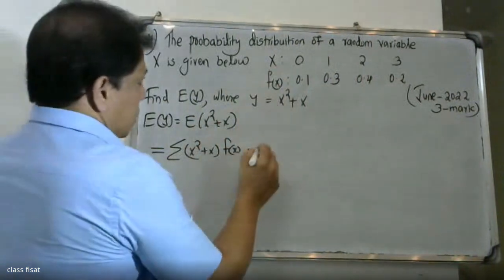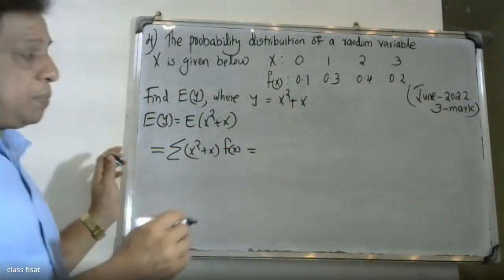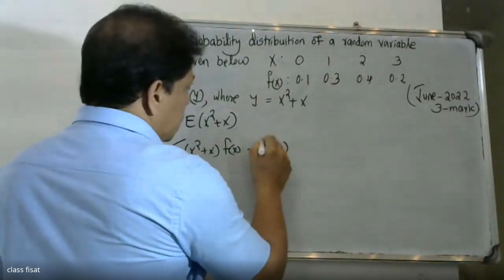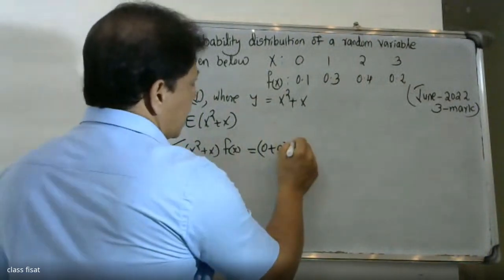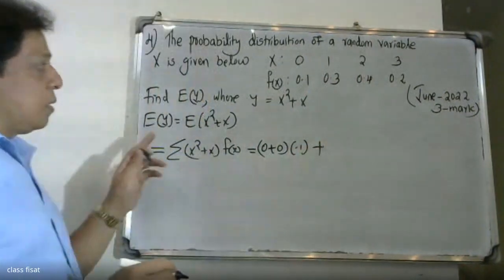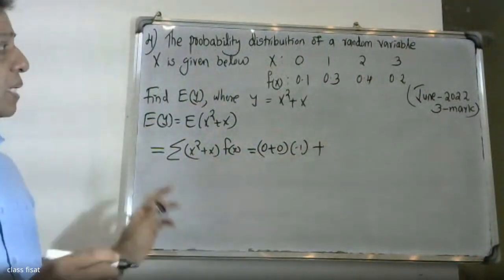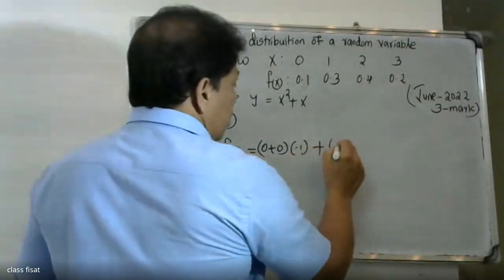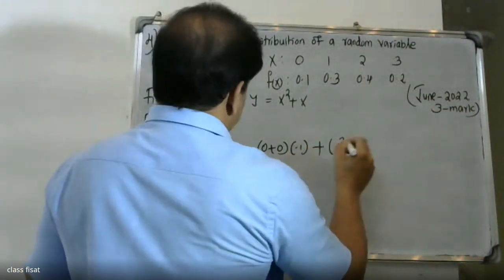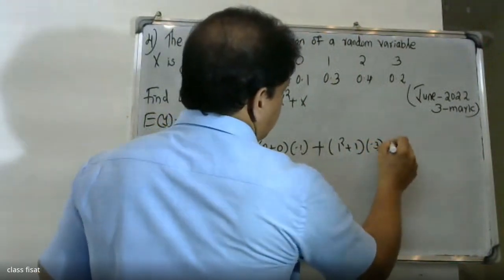Substituting x = 0: (0 squared + 0) times f(0) = 0 times 0.1, giving 0. Then for x = 1: (1 squared + 1) times f(1), with f(1) = 0.3.